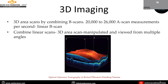Coming to 3D imaging, 3D area scans can be formed by combining B-scans. 20,000 to 26,000 A-scans can be formed with a swept source OCT, which are combined to form a linear B-scan, and multiple linear B-scans can be combined to form a 3D area scan viewable from multiple angles. As we can see here, there is subretinal fluid, pigment epithelium detachment, and the contour of the retina is changed.